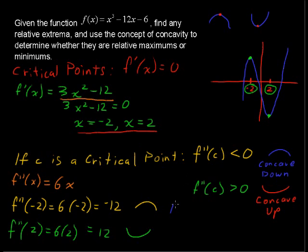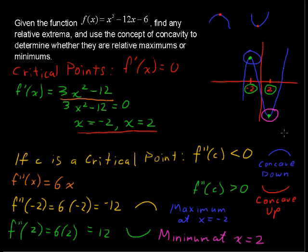And so, therefore, we have a maximum, a relative maximum at x equals negative 2. And we see that right here. And we have a relative minimum at x equals positive 2. And we see that right here. So we use that second derivative test, a little bit faster way, faster than setting up that table for increasing and decreasing function. Faster way to find whether or not function has a maximum point, relative maximum, or a relative minimum, using concavity.